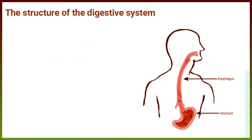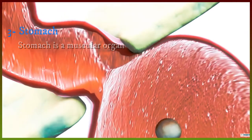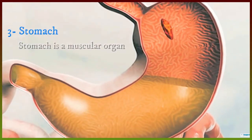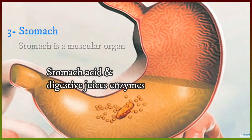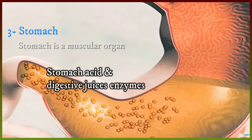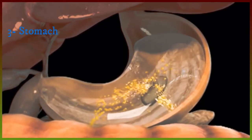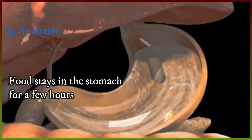Three — the stomach. The stomach is a muscular organ. It mixes food with stomach acid and digestive juices (enzymes) to change the food into a soupy liquid. Enzymes speed up the digestion in the body. Food stays in the stomach for a few hours.